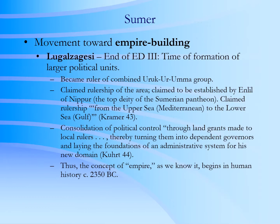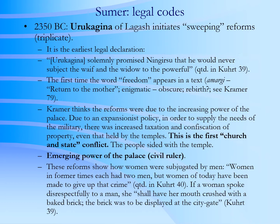Around the time of 2350 BC, we detect the beginning of what we can call today empire building. This begins with Lugal Zagizi and his rulership over a group of cities — Uruk, Ur, and Uuma. One of the remarkable finds of Sumer, among all the texts and tablets, is the sweeping reforms of Uruk Aginah. It must have been important because it's been found in triplicate.